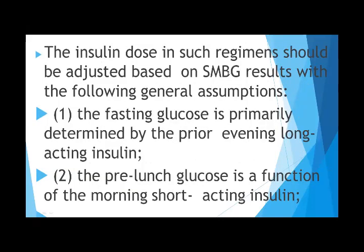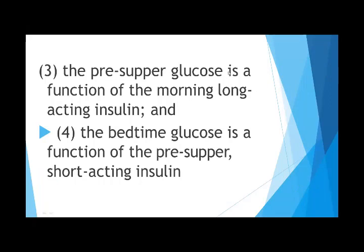After starting the patient on 36 units, we advise checking blood sugar levels after three days. Fasting glucose is primarily determined by the prior evening long-acting insulin. If fasting insulin is high, the nighttime NPH dose is increased by 2 or 4 units depending on the sugar level. Pre-lunch glucose is a function of the morning long-acting insulin; if high, we increase the morning R dose.